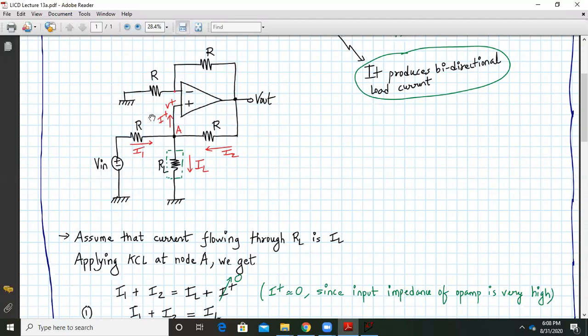Let I1 be the current flowing through this resistor, I2 will be the current flowing through this resistor, and this point is marked as A which is also the V plus and current flowing through RL is IL. RL is our load resistance.